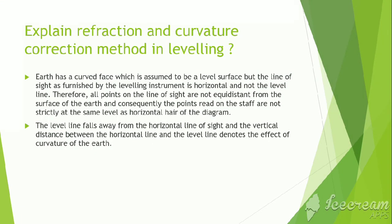To explain refraction and curvature correction, the earth has a curved face which is assumed to be a level surface, but the line of sight is furnished by the leveling instrument is horizontal and not the level line. Therefore, all points on the line of sight are not equal distance from the surface of earth, and consequently, the points read on the staff are not strictly at the same level as horizontal hair of the diaphragm. The level line falls away from the horizontal line of sight, and the vertical distance between them is the curvature of earth.